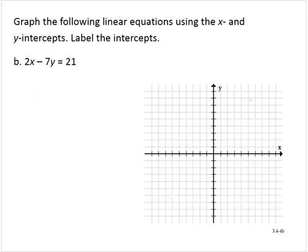2x minus 7y equals 21. All right, so let's find the x-intercept.